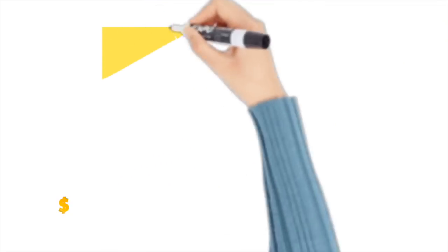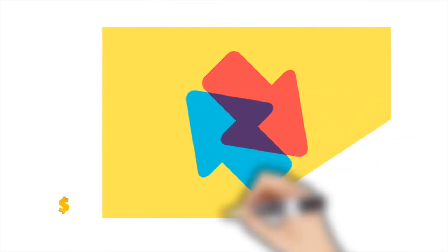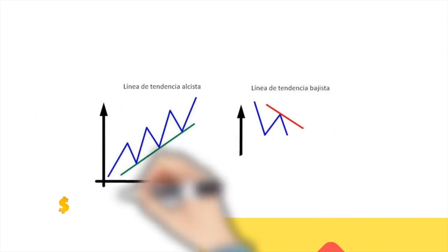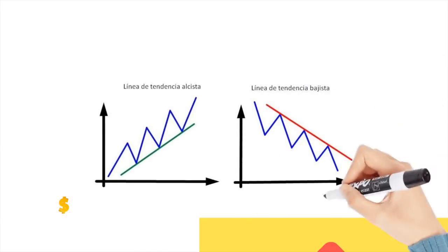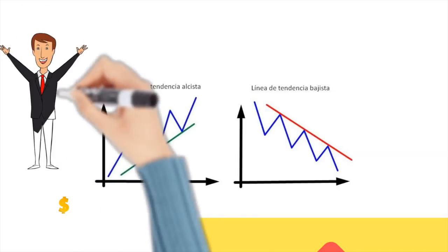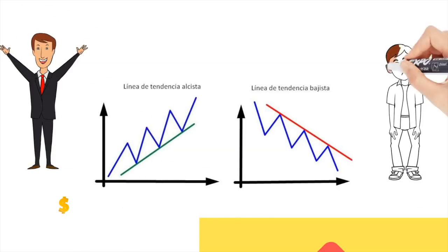Hablemos de las posiciones que puede obtener una persona respecto a una acción: alcistas versus bajistas. Los alcistas son los que son optimistas con respecto a una acción; si estamos en una corrida alcista, significa que la acción está subiendo. Por otro lado, si eres bajista, piensas que esta acción va a bajar; si hay un mercado bajista, el mercado está bajando, está en una depresión. Es terminología que puedes encontrar en artículos o videos sobre inversiones.